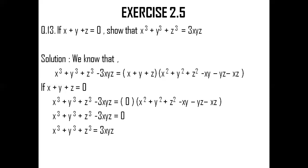In the RHS, 0 into the bracket x squared plus y squared plus z squared minus xy minus yz minus xz — since 0 into anything is 0 — I am left with x cubed plus y cubed plus z cubed minus 3xyz is equal to 0. Taking minus 3xyz to the right-hand side, I get x cubed plus y cubed plus z cubed is equal to 3xyz, which is exactly what we want. This was the solution to question number 13.